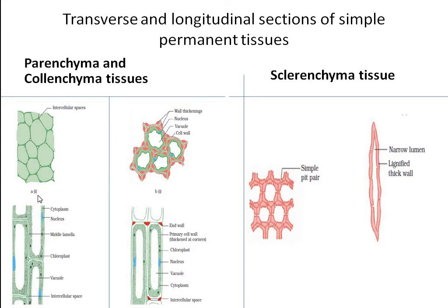Parenchyma cells are thin-walled. The cytoplasm is full inside, there is a nucleus, and a large vacuole in the center, as found in plant cells. There are also many plastids — chloroplasts are present for photosynthesis. Where two or more cells are joined together around a point, there are intercellular spaces between them.